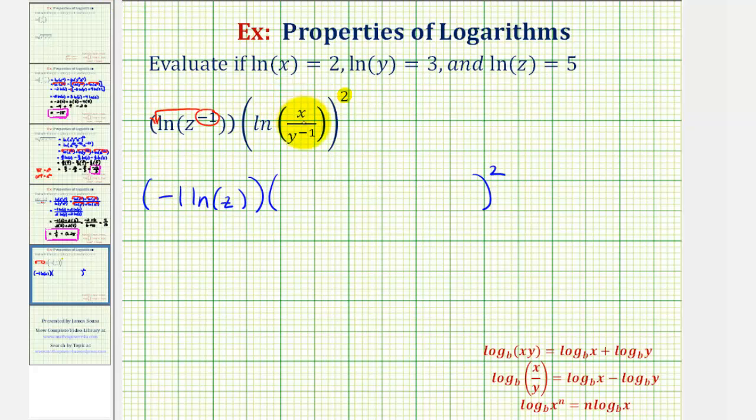Now if we wanted to, we could rewrite this fraction using positive exponents, meaning if we have x divided by y to the negative one, if we were to move y to the negative one up to the numerator, it would change the sign of the exponent. So this is just equal to x times y. So we could write this as natural log xy and then expand it.